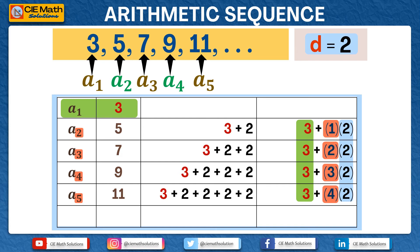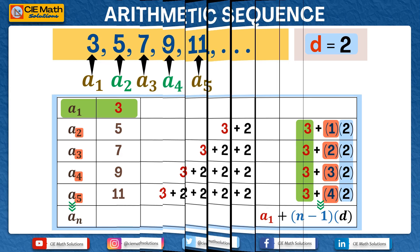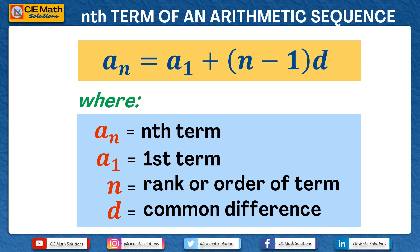If we want to find the general formula for the nth term of an arithmetic sequence, we can write an, the general term, as the first term a1, plus 1 less than the order of the term — that is n minus 1 — multiplied by the common difference d. So an equals a1 plus n minus 1 times d. We have just shown the nth term or general term of an arithmetic progression, where an is the nth term, a1 is the first term, n is the rank or order of the term, and d is the common difference.